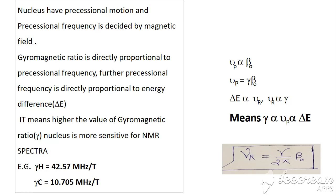A nucleus has a precession motion, and the precession frequency is decided by the magnetic field. The precession frequency is directly proportional to energy difference. According to these derivations, a higher value of the gyromagnetic ratio means the nucleus is more sensitive for NMR spectroscopy.